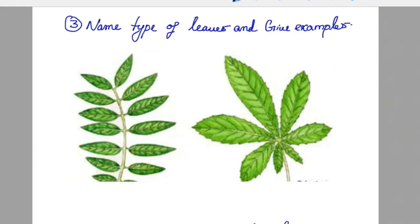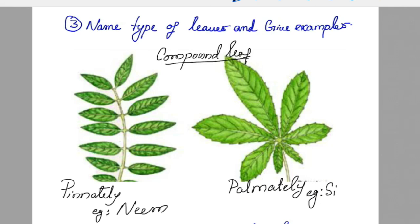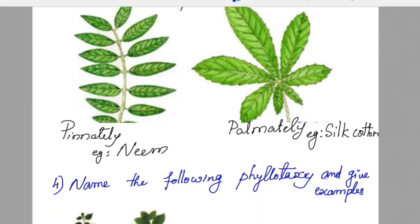Identify the two types of compound leaves and give examples. There are two types of compound leaves: pinnately compound leaf — example: neem, rose; and palmately compound leaf — example: silk cotton.